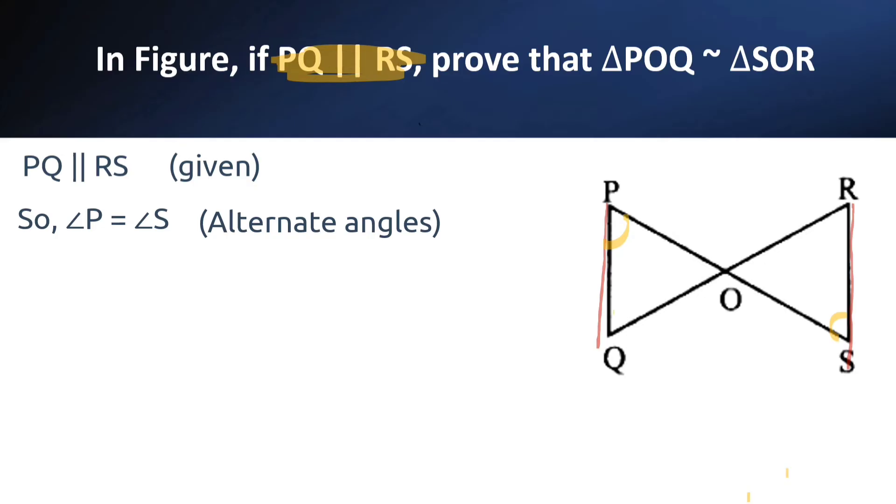Similarly, angle Q is equal to angle R. Why? They are also alternate angles.